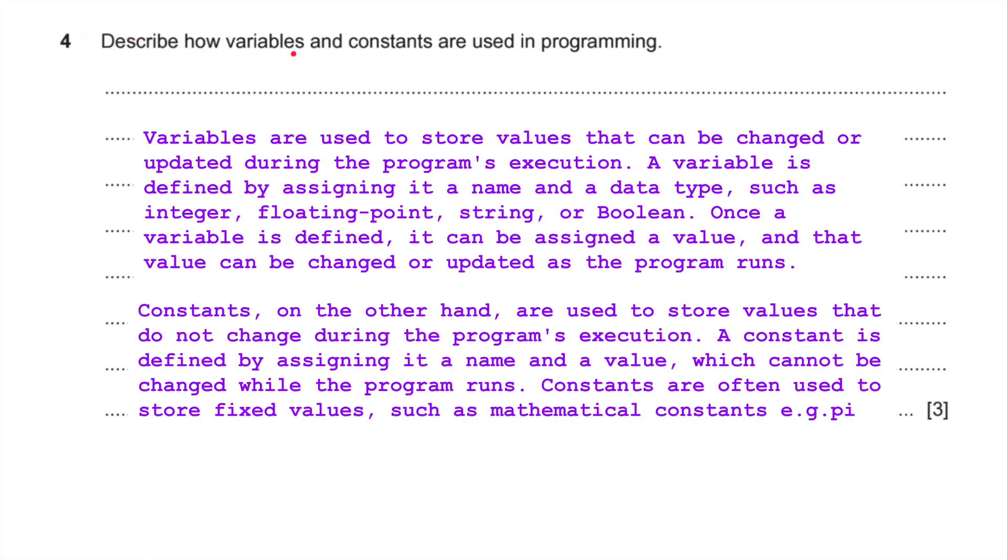Number four, I'm going to describe how variables and constants are used in programming. I'm going to take the two. A variable or variables are used to store values that can be changed or updated during the program's execution. A variable is defined by assigning it a name and a data type, such as an integer, a floating point, a string, a boolean. Once a variable is defined, it can be assigned a value. And that value can be changed or updated as the program runs. On the other hand, constants are used to store values that do not change during the program's execution. A constant is defined by assigning it a name and a value, such as a variable, which cannot be changed while the program is running. Constants are often used to store fixed values such as mathematical constants, e.g. pi, or the number of days in a week, or the 12 months of the year. Things that don't change.